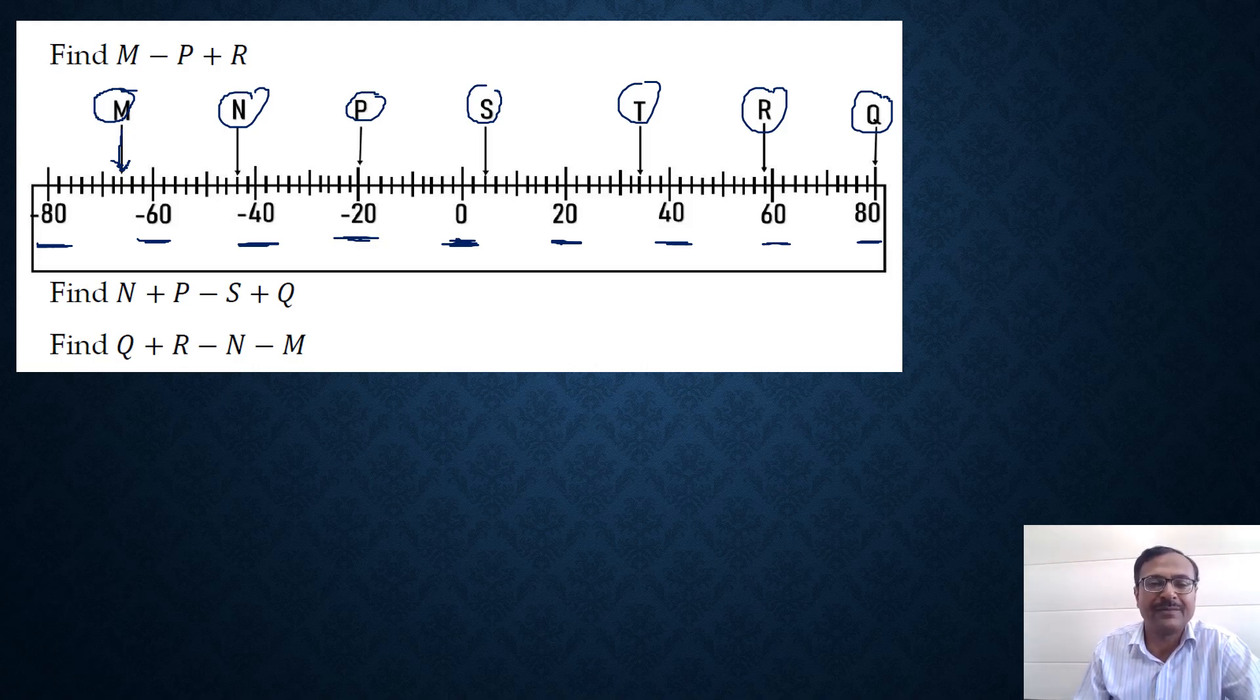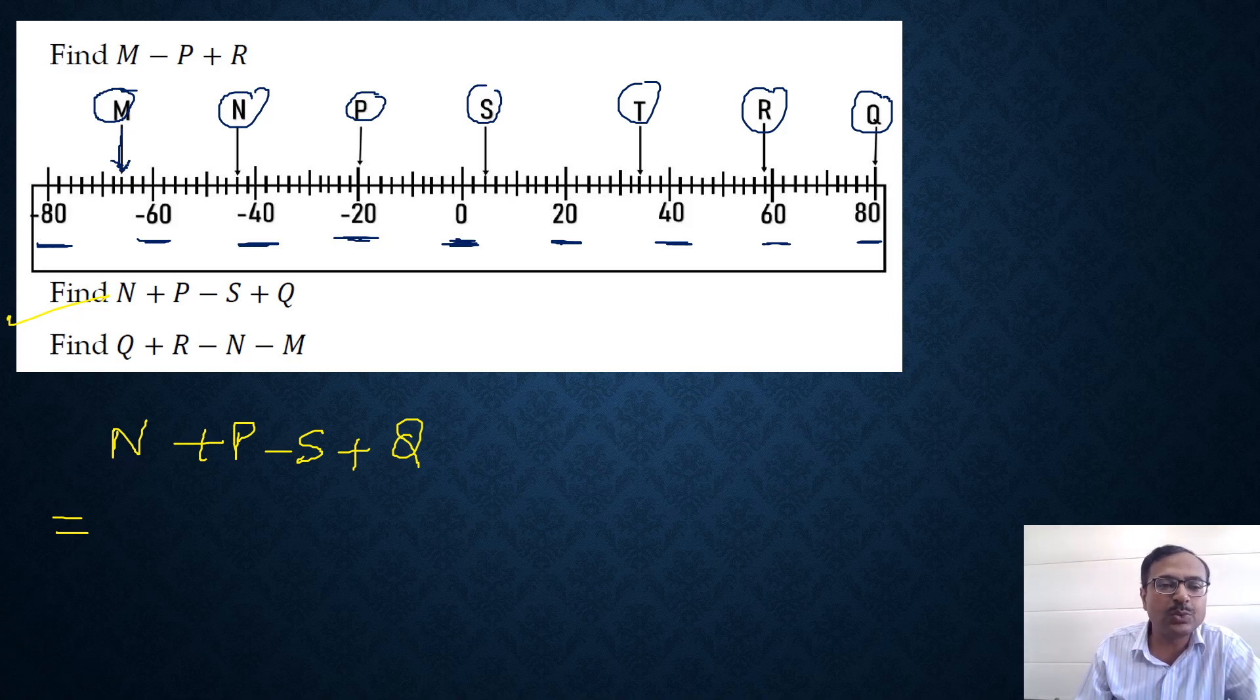The first thing is to identify those integers from the scale. The first question is to find N plus P minus S plus Q. You first have to identify what is N. N corresponds to 2 units to the left of minus 40. Between minus 40 and minus 60 you have 10 units, so each unit corresponds to minus 2. If you move 2 units towards the left, then minus 40, minus 42, minus 44. Therefore N corresponds to minus 44.